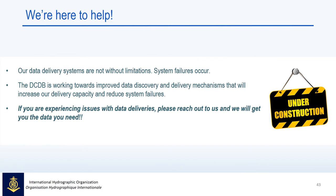It's important to note that our data delivery systems are not without limitations. We do have data request failures that occur, and this is something we are working towards improving — both the discovery and delivery mechanisms — to ultimately increase our delivery capacity and reduce these failures. If you do come to our website and experience any issues with data deliveries or discoveries, please reach out to us. There are email addresses on all of our webpages, and we will personally work with you to make sure you get the data that you need.